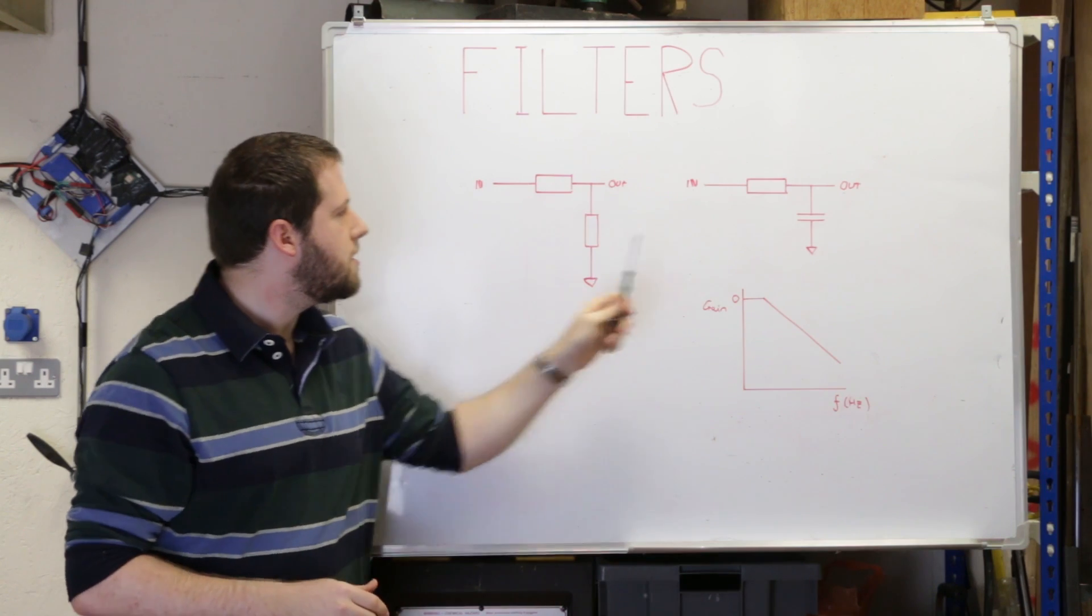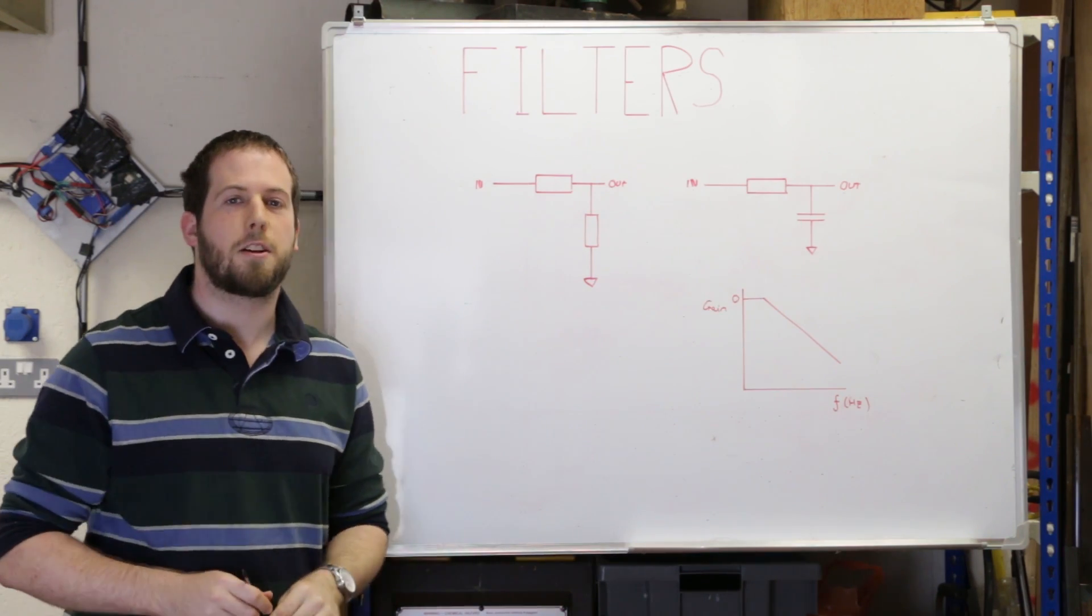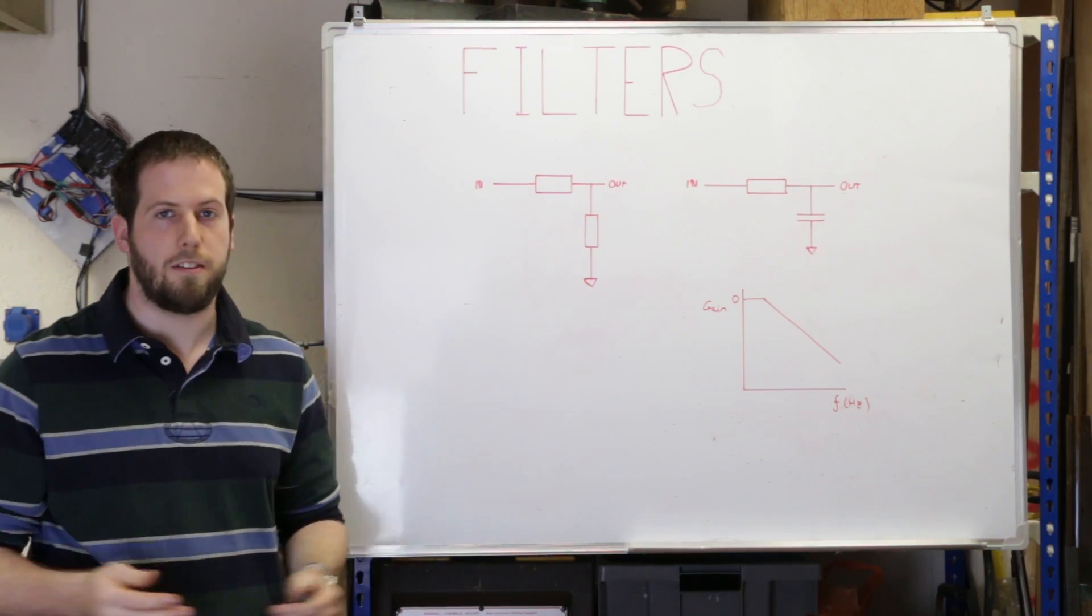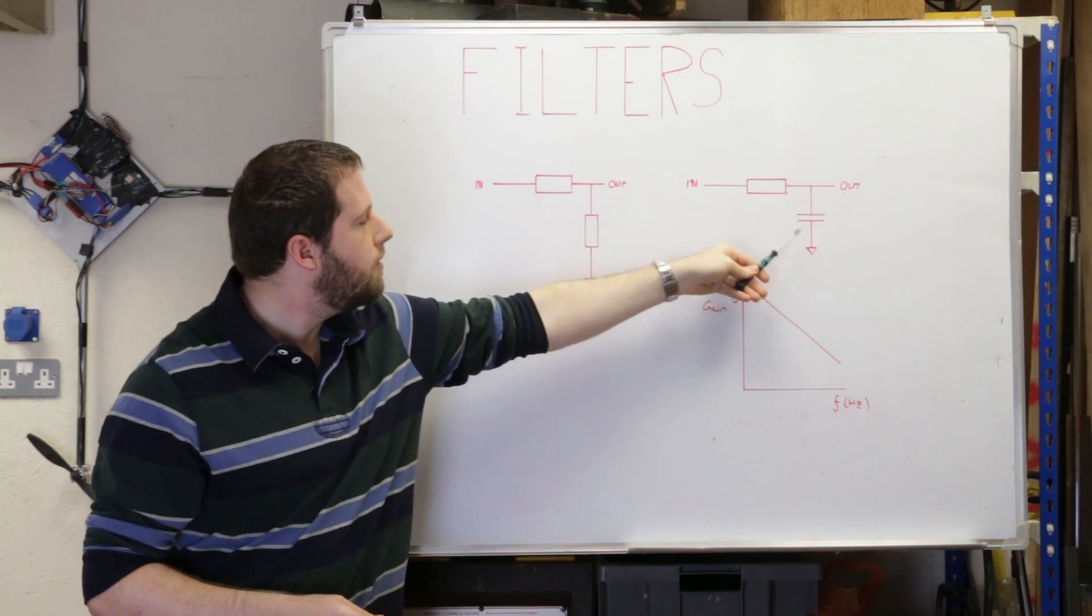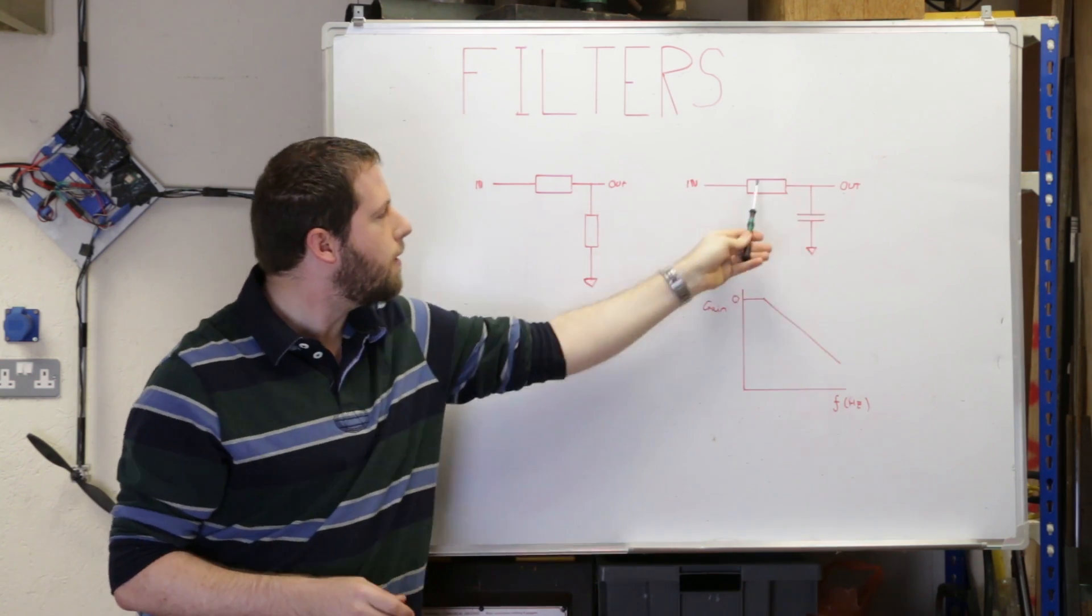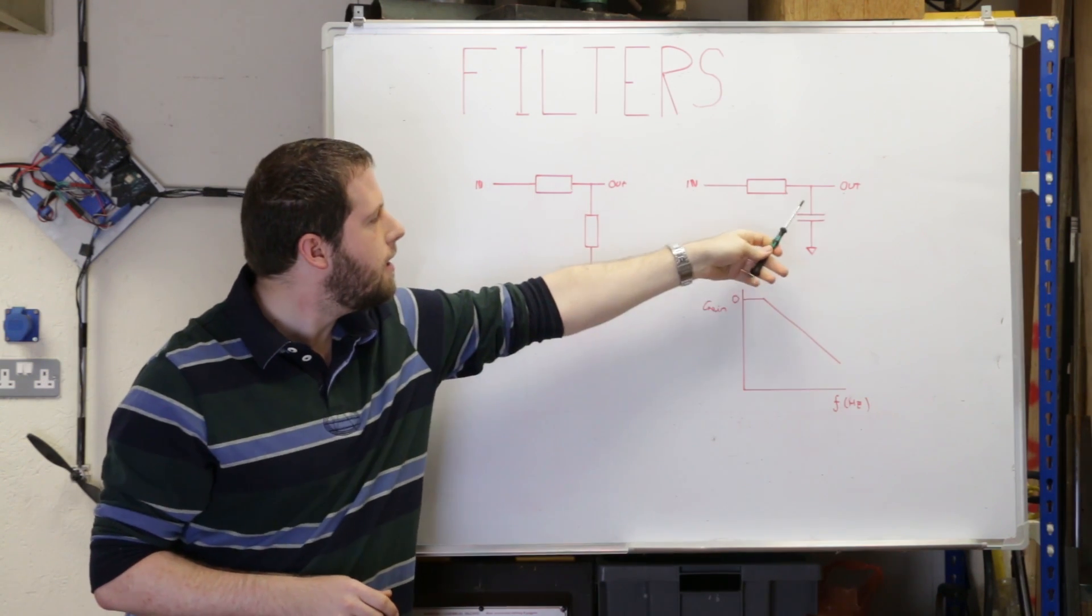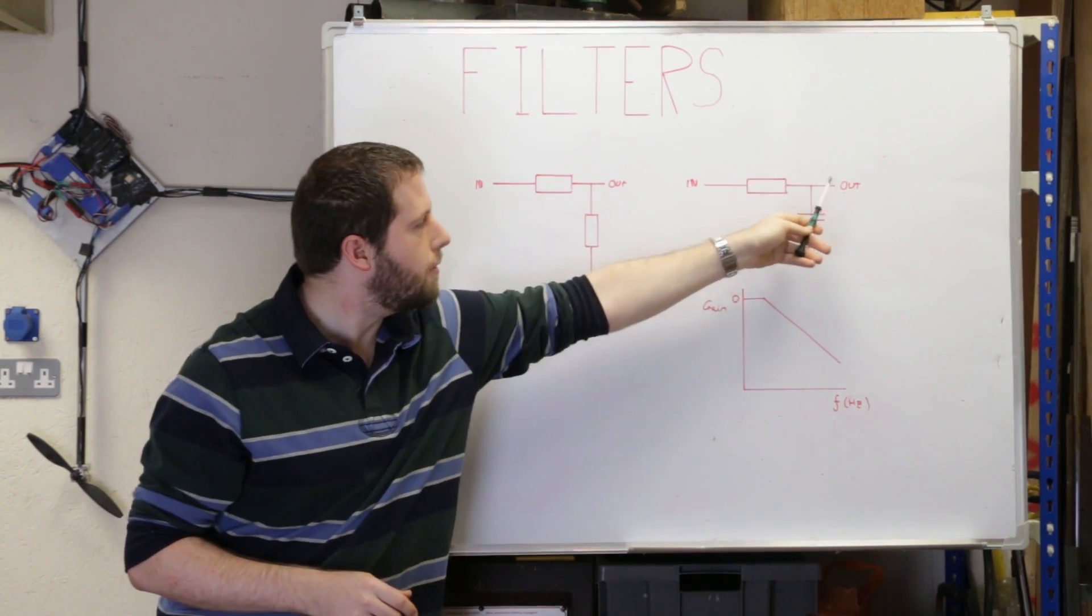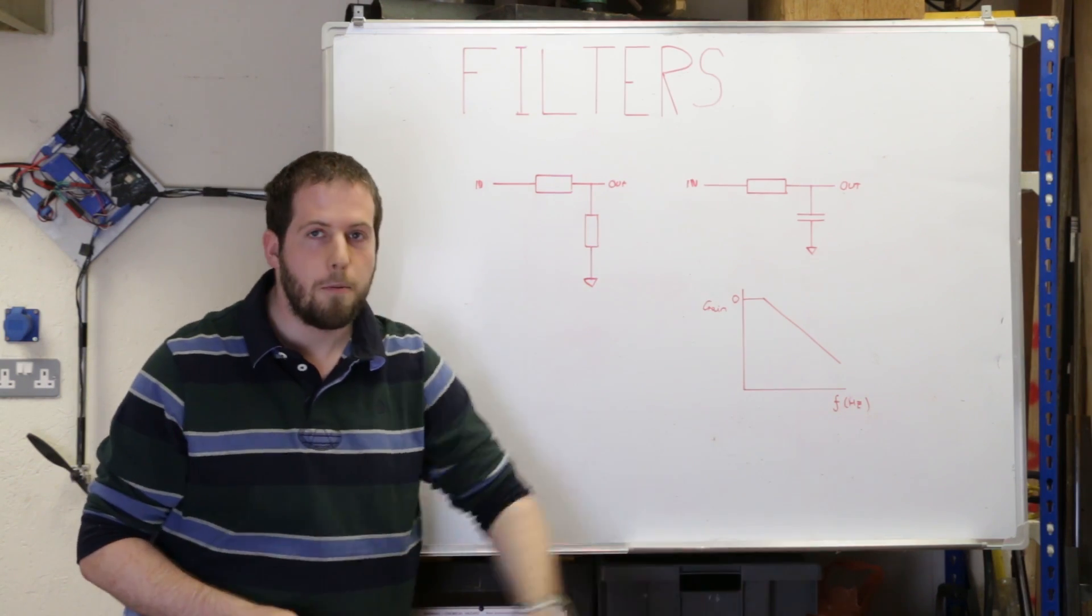If we replace this resistor with a capacitor, the impedance or AC resistance of a capacitor decreases with frequency, just inherently as part of the properties of a capacitor. At DC, this is effectively an open circuit and the output voltage equals the input voltage. As the frequency increases, the impedance of this decreases and therefore the output voltage gets smaller. So what we've made is a very basic low pass filter.